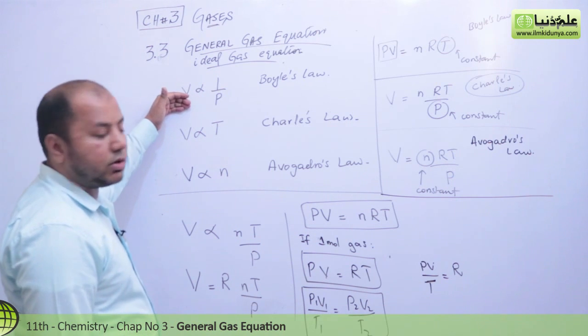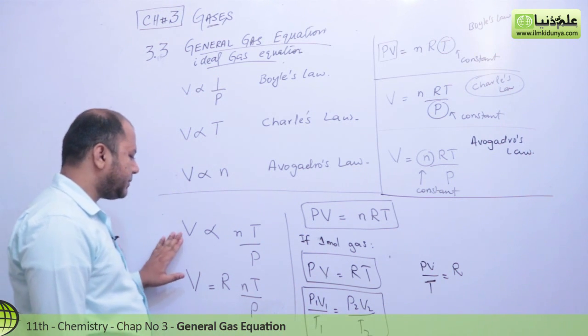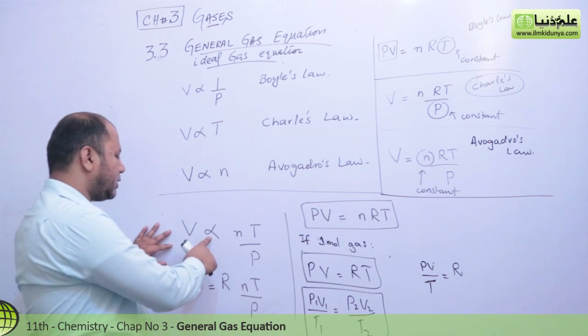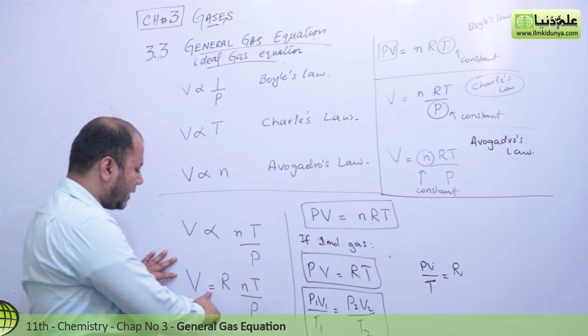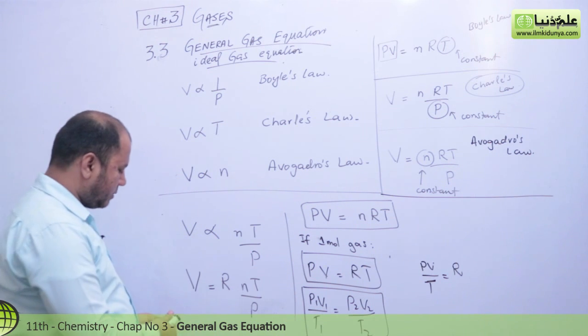In this, I gave you an idea about Boyle's law, Charles' law, and Avogadro's law. We extracted these three laws in the form of this equation. When we converted proportionality to equality, we got the general gas constant, and the equation becomes this.